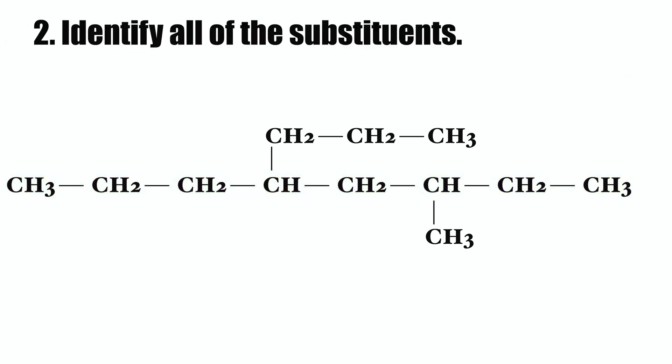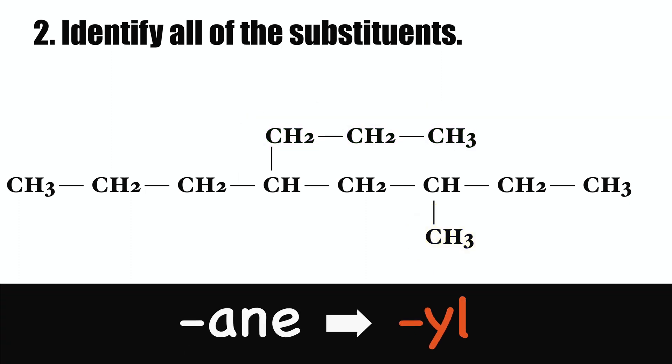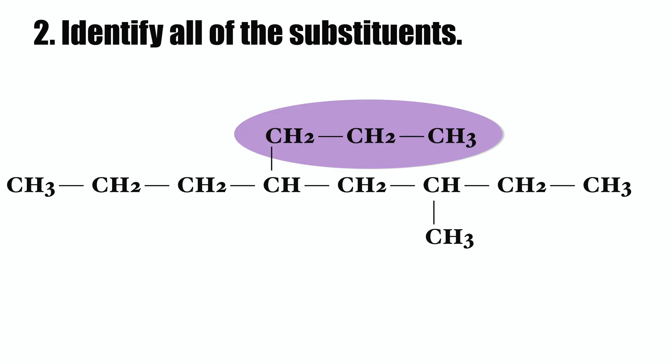Rule number two: identify all of the substituents, groups appending from the parent chain. The substituents are named by replacing the suffix '-ane' with '-yl'. So propane substituent is called propyl, and methane substituent is called methyl.